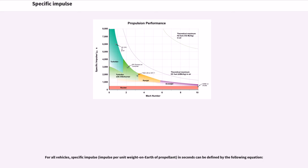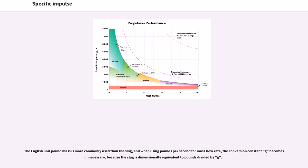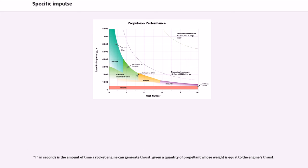For all vehicles, specific impulse in seconds can be defined by a standard equation. The English unit pound-mass is more commonly used than the slug, and when using pounds per second for mass flow rate the conversion constant g becomes unnecessary, because the slug is dimensionally equivalent to pounds divided by g. In seconds, specific impulse is the amount of time a rocket engine can generate thrust given a quantity of propellant whose weight is equal to the engine's thrust.